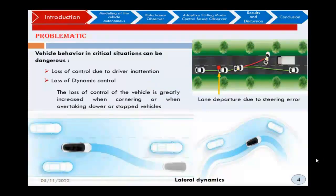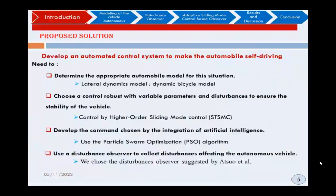Problematic. The vehicle behavior in critical situations can be dangerous in cases of loss of control due to driver inattention, and the causes of many factors such as accomplishment of two tasks in parallel, driving and telephone, for example, drivers' reaction delay and perception of the environment. Or in cases of loss of dynamic control, the loss of control of the vehicle is greatly increased when cornering or when overtaking slower or stopped vehicles.